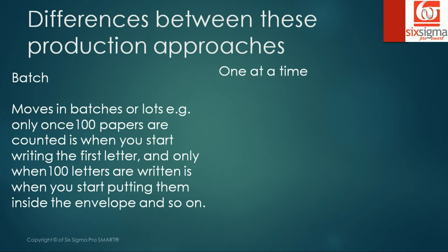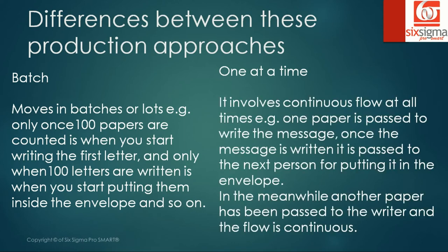Only once 100 letters are put inside the envelope do you start stamping them, and only once all 100 letters are stamped do you start dispatching them. As against this, a one-at-a-time process involves continuous flow at all times. For example, if the first paper is passed to write the message and once the message is written it is passed to the next person for the envelope — but after passing the first paper, the next paper is already in hand. That gap present in batch production, where one task is completed before the other begins, is no longer applicable in a one-at-a-time process.